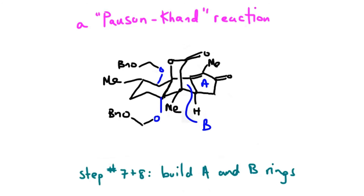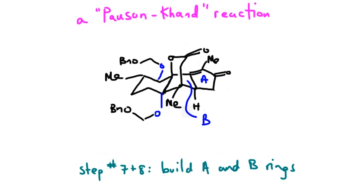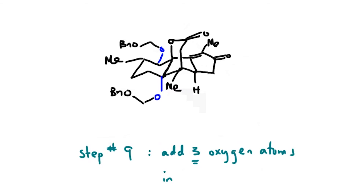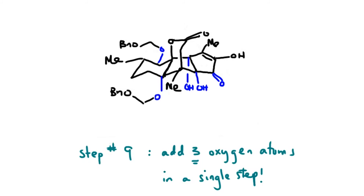We were able to incorporate three oxygen atoms in the A ring in a single step using a reagent known as selenium dioxide. This was a really remarkable reaction. It simplifies the synthesis dramatically by bringing in all of this functionality in a single step.